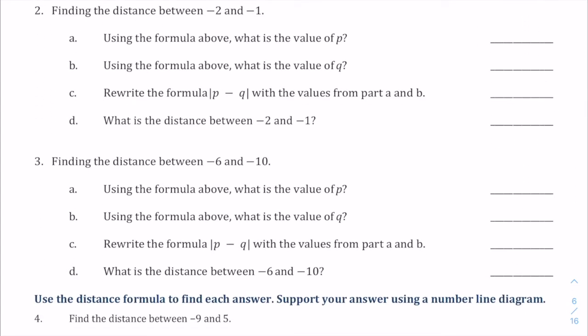Let's try finding the distance between negative two and negative one. So p will be negative two, q will be negative one. So we go rewrite the formula, absolute value, p is negative two, minus from the formula, then our negative one.